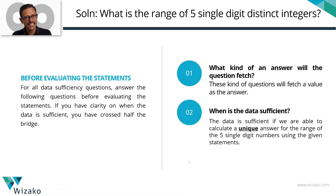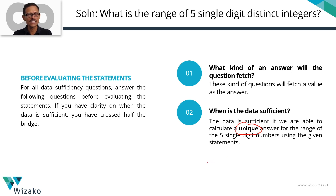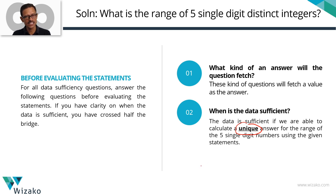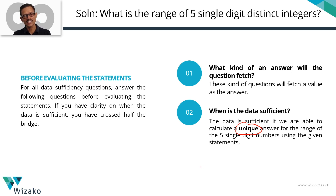The data is sufficient if we are able to get a unique value for the range of these five numbers. The data is not sufficient if we are not able to find even a single value, or if we get more than one value for the range.